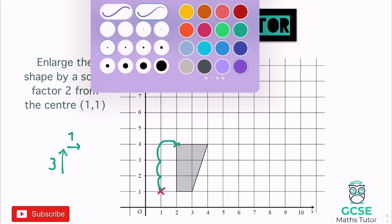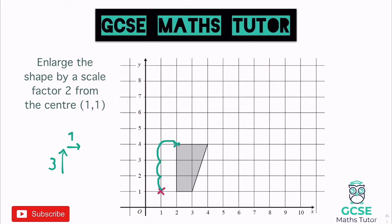At the moment it's going up three and across one. For a scale factor of two, instead of going up three I'm going to go up six, and instead of across one I'm going to go across two. Going back to the center of enlargement, I go up six — one, two, three, four, five, six — and across two — one, two — and that's where that point is going to go.